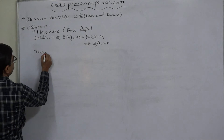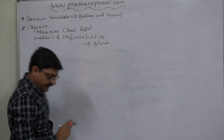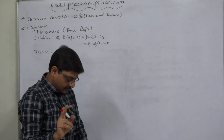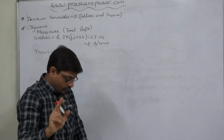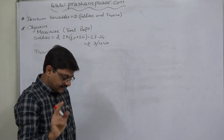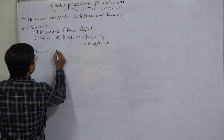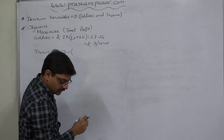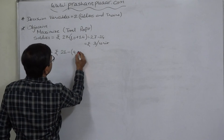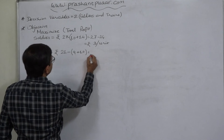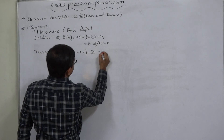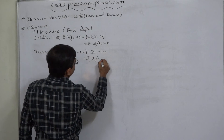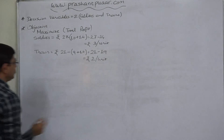Similarly for trains: each train sells for rupees 21, uses rupees 9 of raw materials, and takes rupees 10 of overhead cost. So profit = 21 minus (9 + 10) = 21 minus 19 = rupees 2 profit per unit of train.